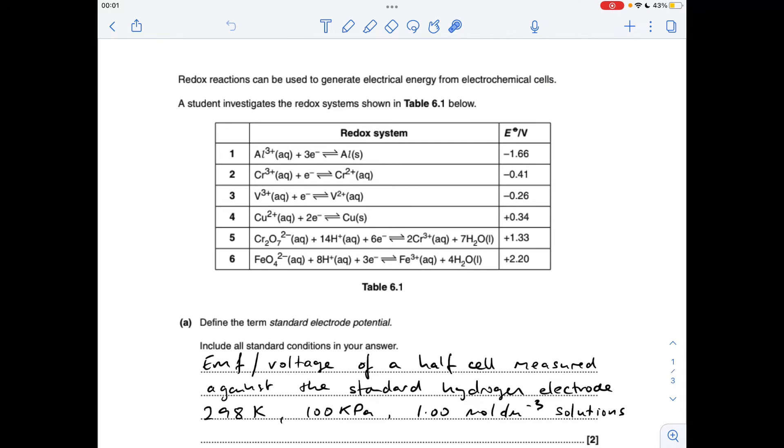We've got another question on the electrode potentials topic. As always, the link to the questions is in the description if you want to try them first. The definition for standard electrode potential is the EMF or voltage of a half cell measured against the standard hydrogen electrode. The standard conditions are 298 Kelvin, 100 kilopascals, and 1 mole per decimeter cubed of solutions.